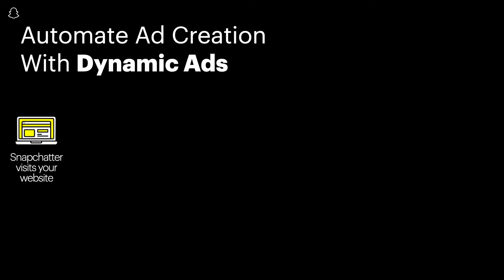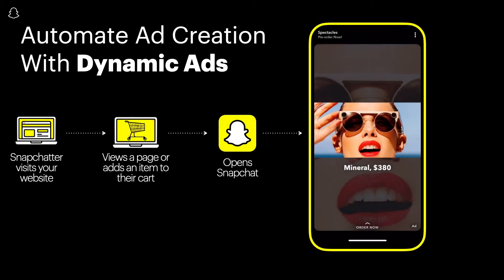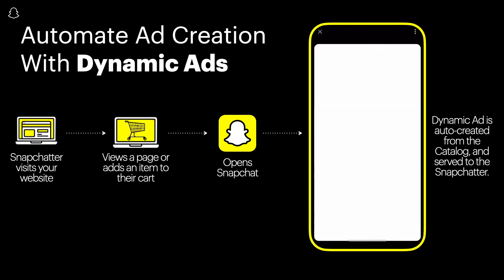Here's a simple breakdown of how Dynamic Ads work. First, a Snapchatter visits your website and views product pages or adds items to their cart. Once they open Snapchat, they'll be eligible to receive an ad. The Dynamic Ad is auto-created from the catalog and served to the Snapchatter.